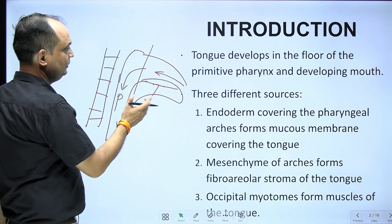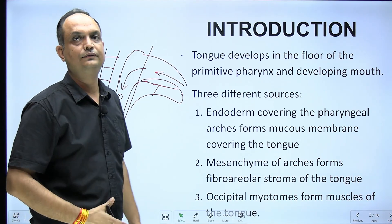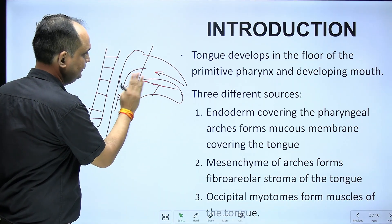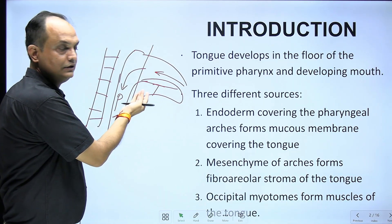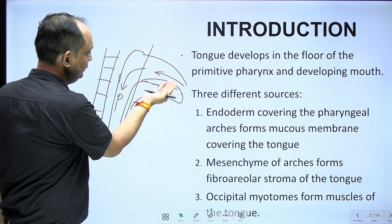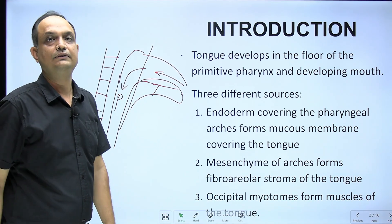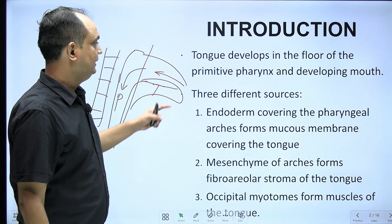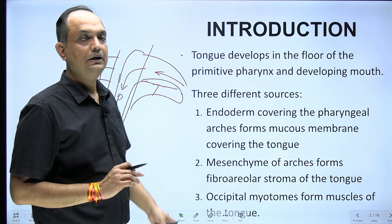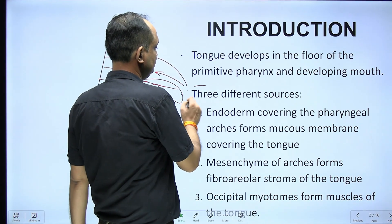So the tongue lies ventral to the pharynx, not on the dorsal side. In embryology, this is the ventral surface and it forms the floor of the pharynx. The tongue has three different sources.